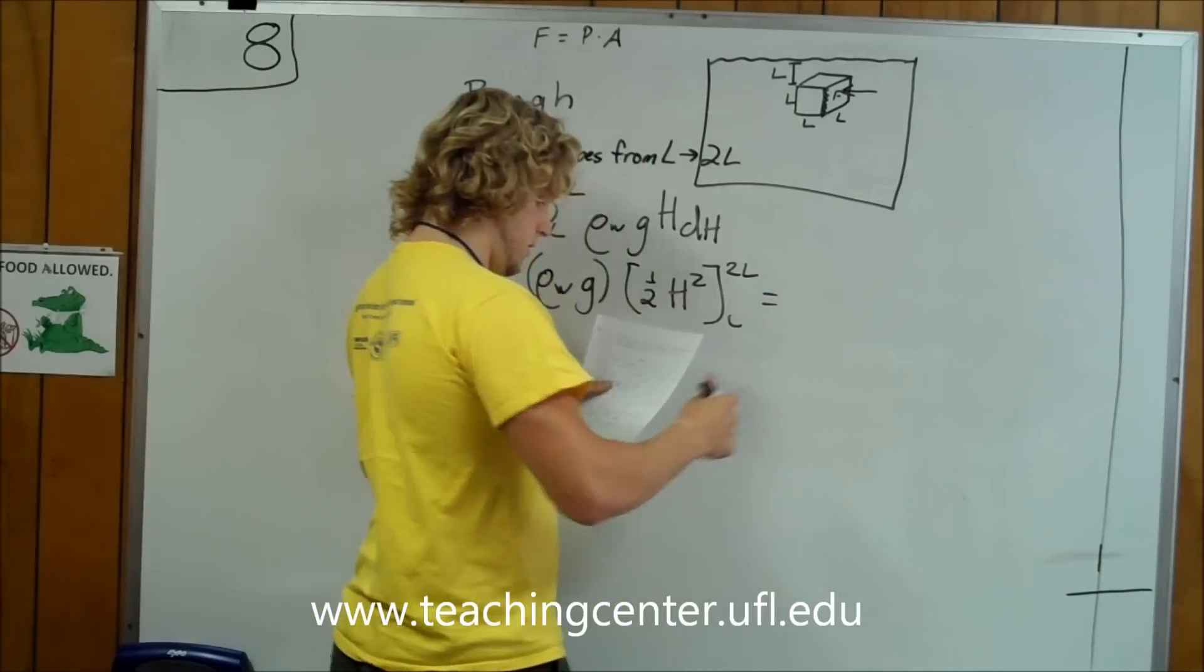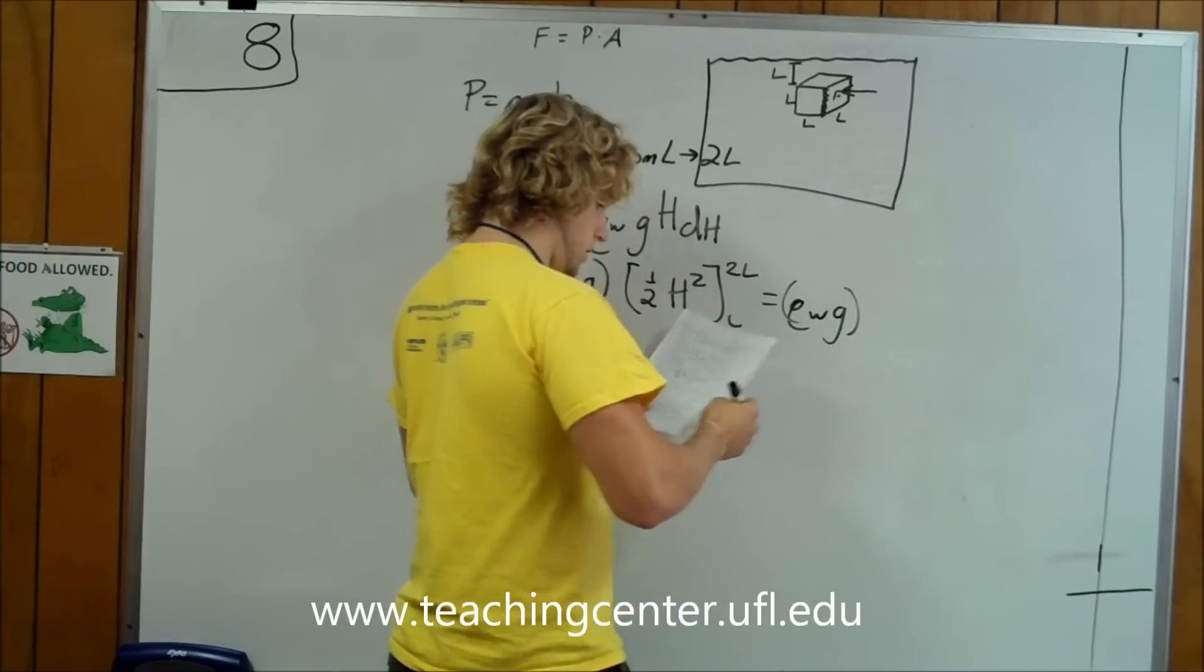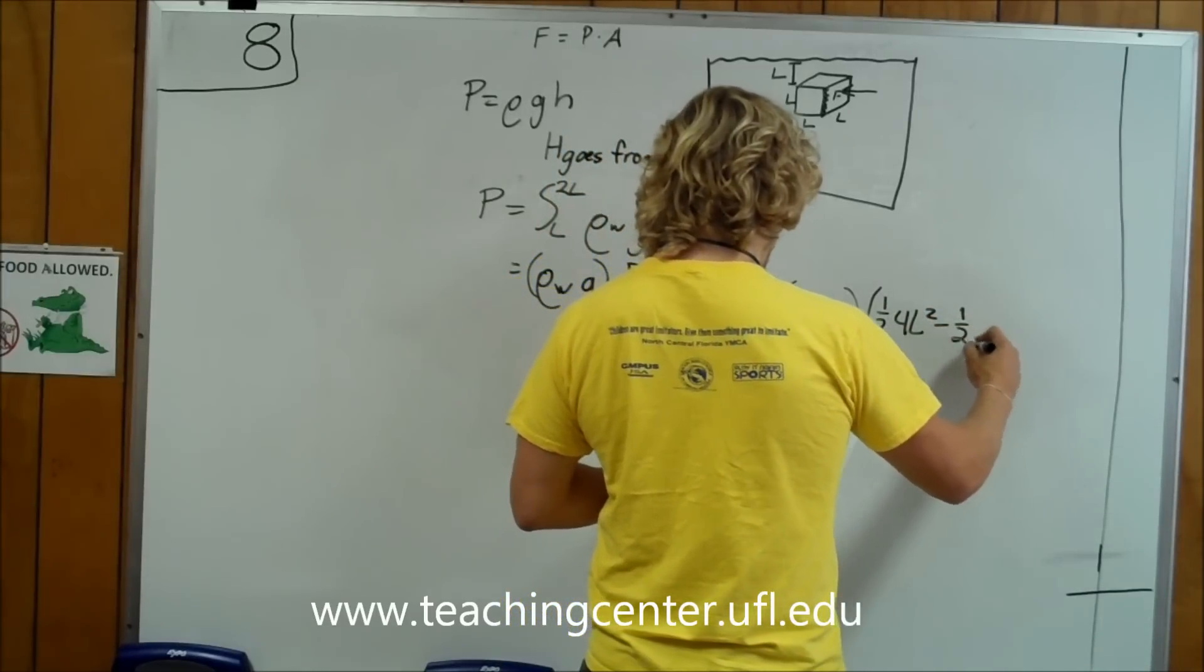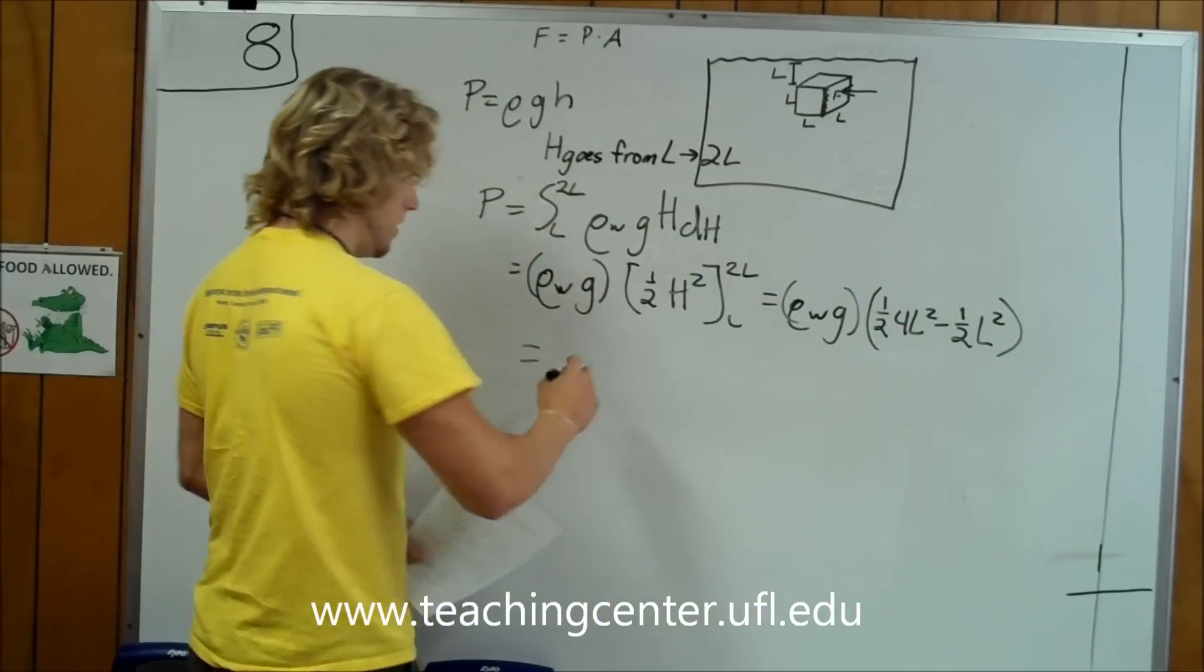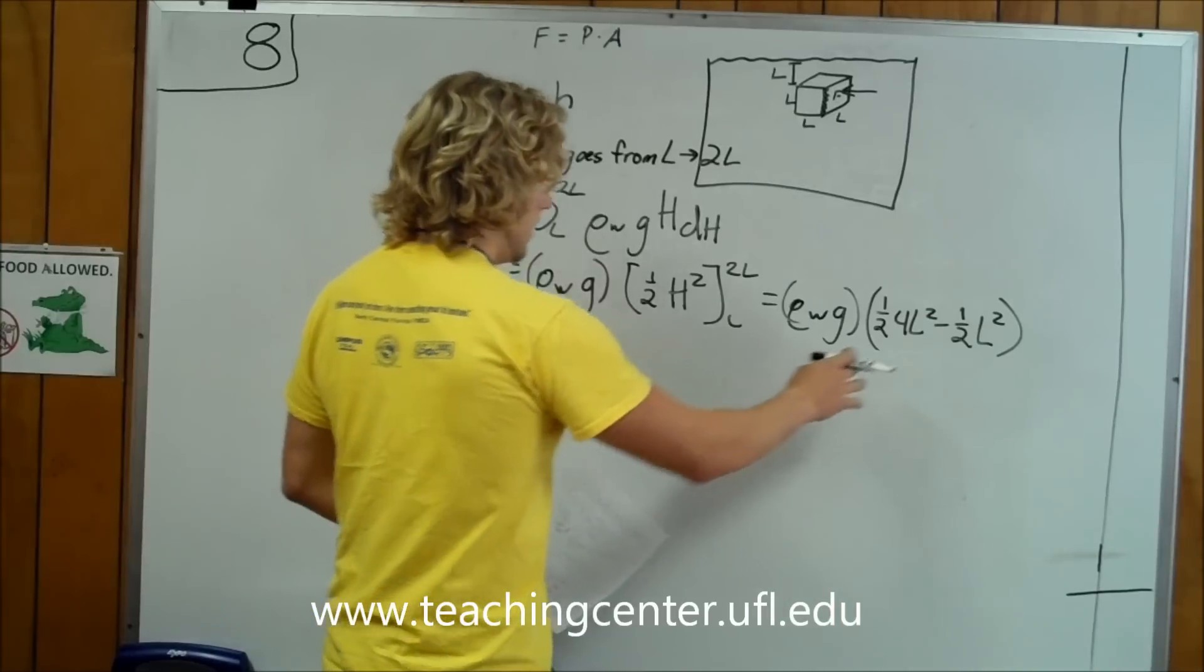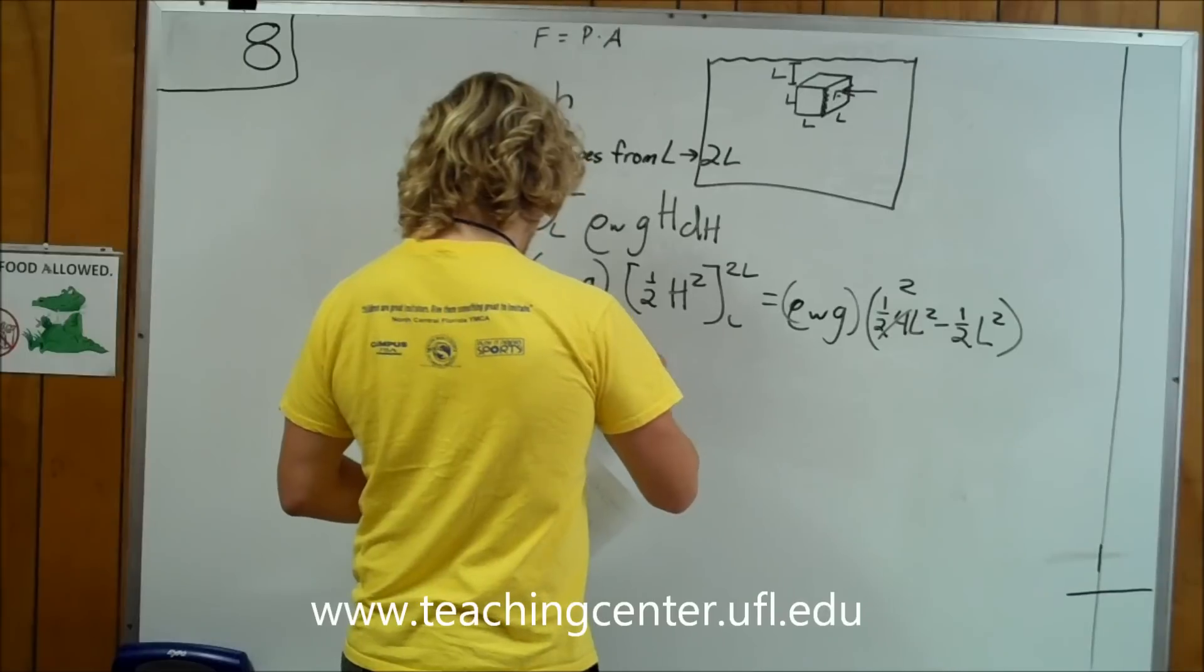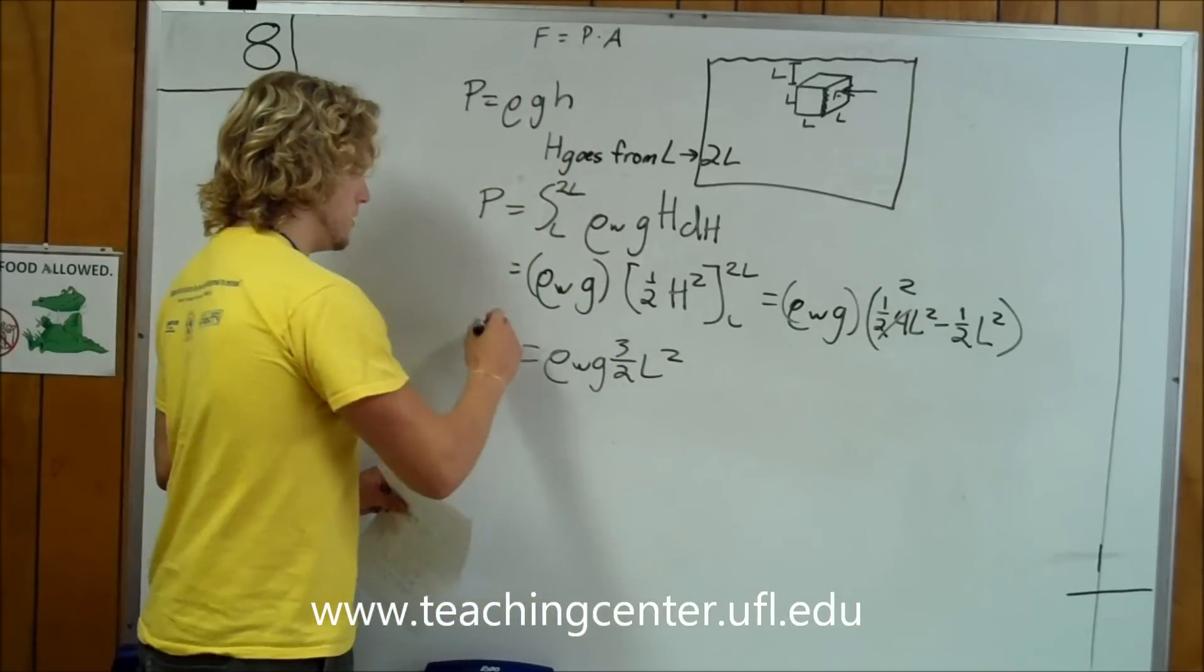That means we end up with rho W G times one half 4L squared minus one half L squared. That means we have rho W G, this goes to 2L squared minus one half L squared is three halves L squared. Three halves L squared. And then now that's the pressure.